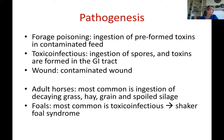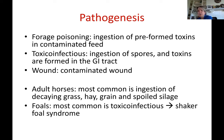Forage poisoning involves ingestion of preformed toxins from decaying grass, hay, or grain. The toxico-infectious form involves ingesting spores that then produce toxins in the GI tract. This occurs in foals because their immune systems are not strong enough to clear these toxins. In adult horses it happens but is not typically a problem. In foals it causes shaker foal syndrome, first described in Kentucky in the 1970s, where foals would get up to nurse, start shaking, and collapse.